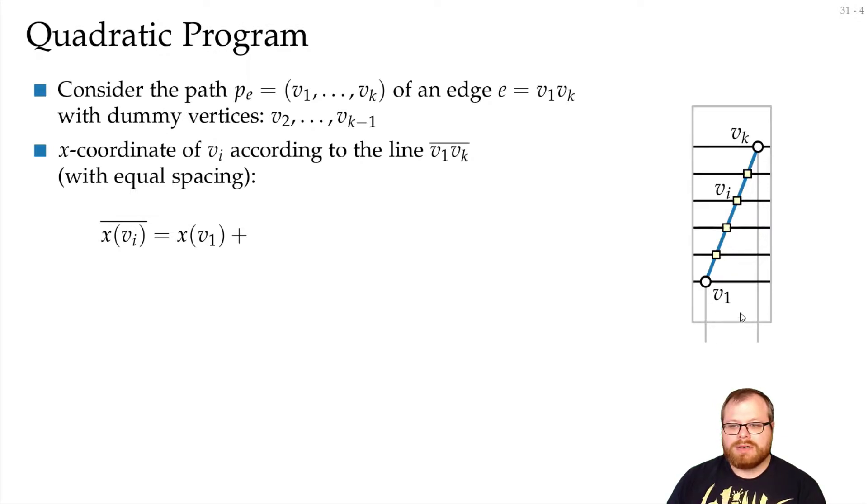And the part of this distance is just what is the number of layers between these two, divided by what is the total number of layers, and that multiplied with the horizontal distance. This should be the target. There is where we want to place the dummy vertex, and if we can do that for all of those, then we have a straight line here.